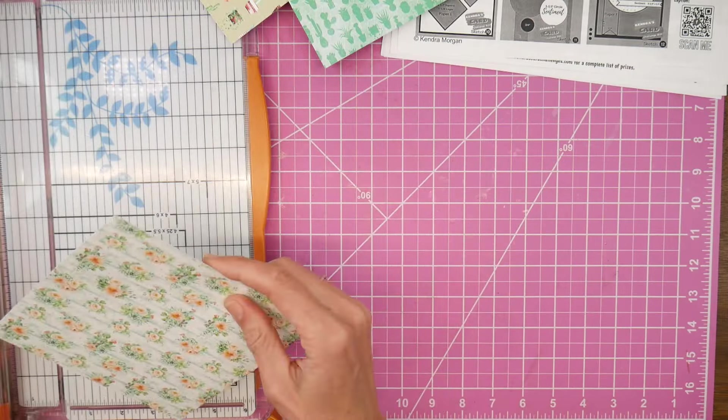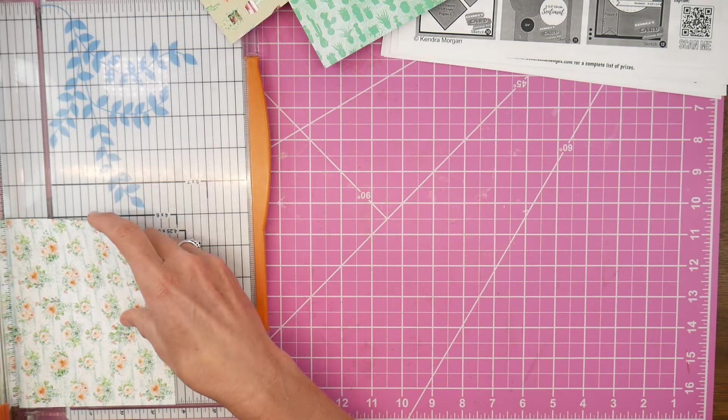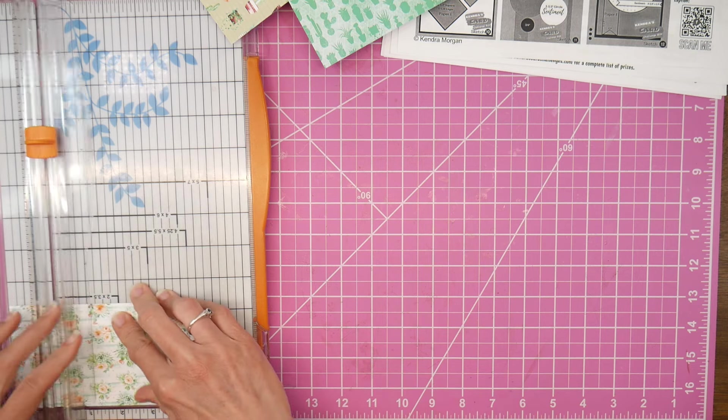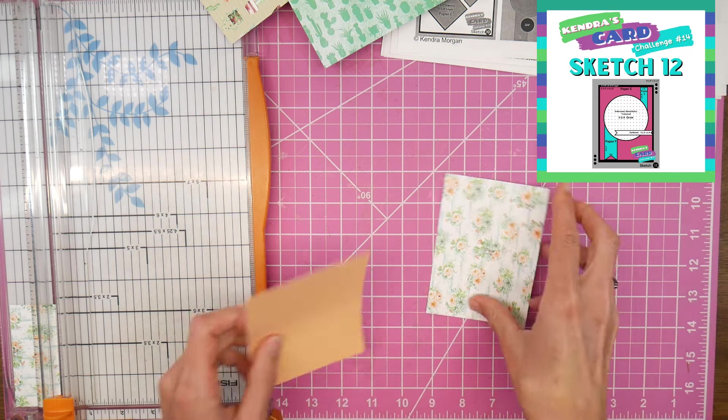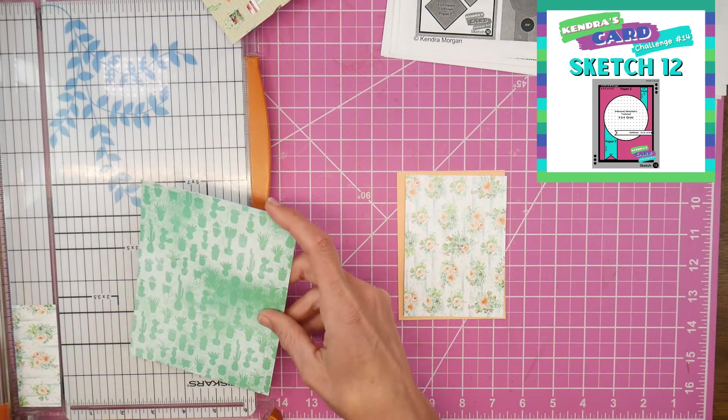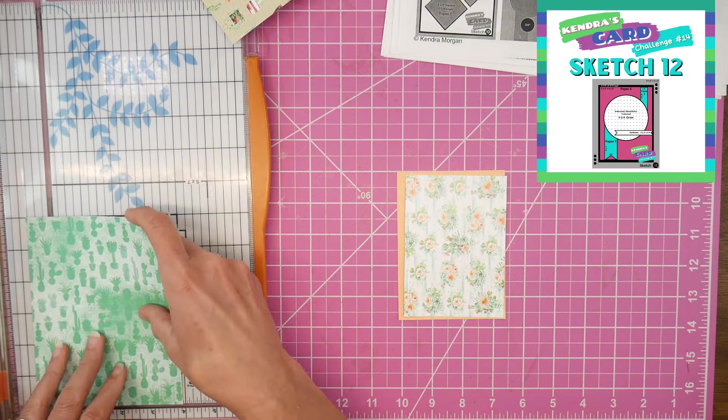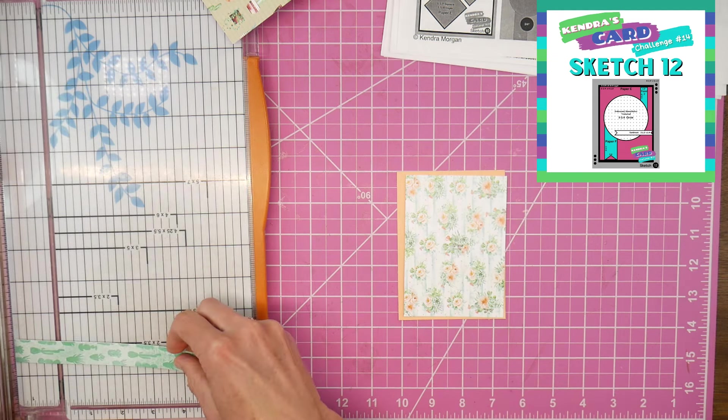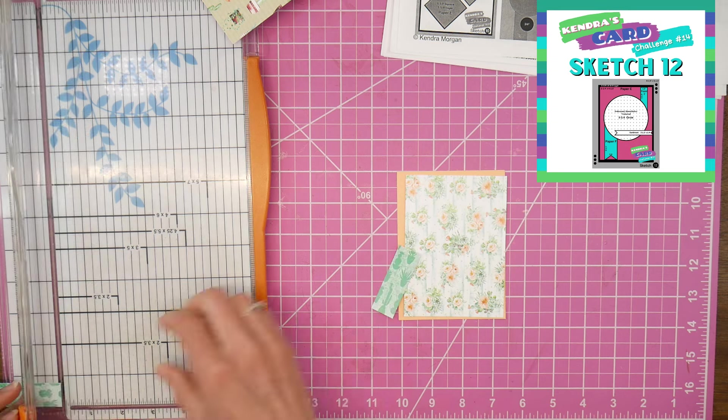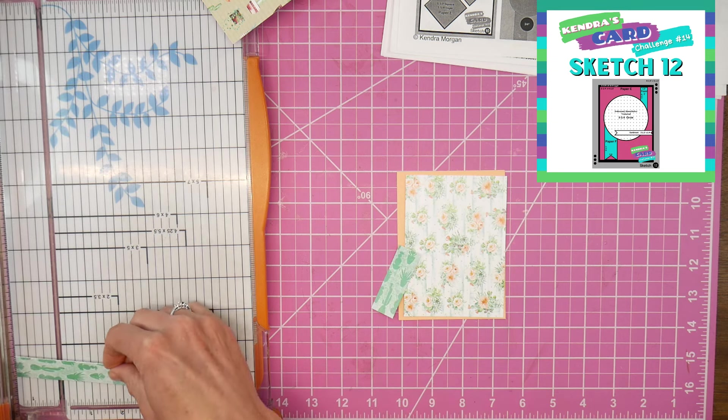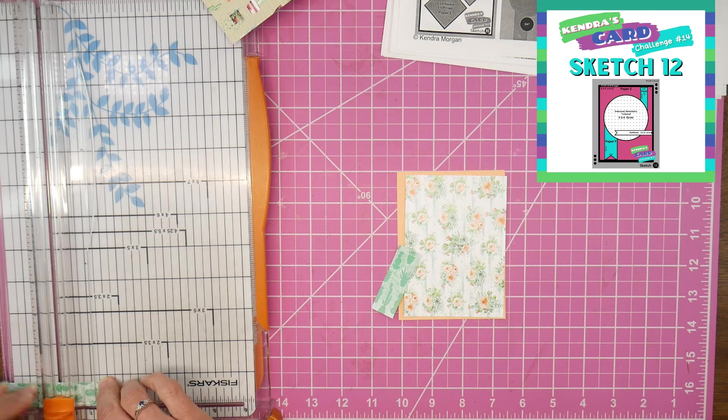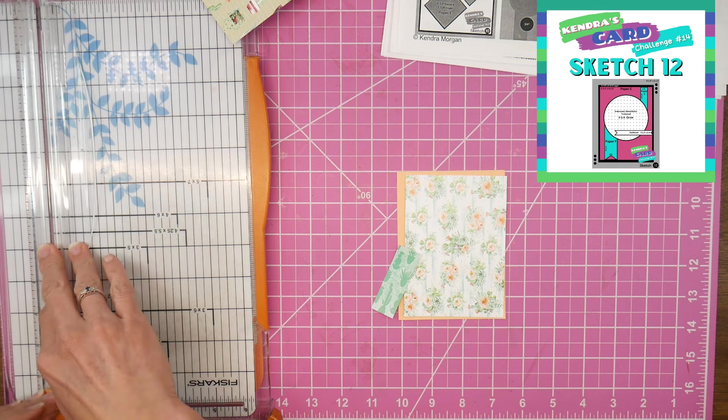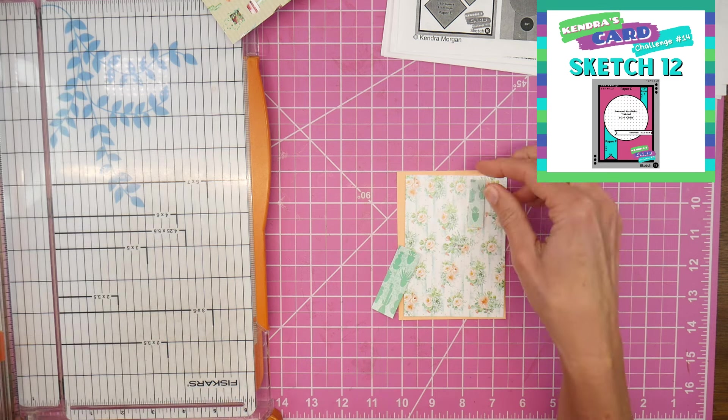I've chosen a couple patterns of the paper to work with and I'm going to start with sketch 12 and get my pieces cut down according to the dimensions on the card sketch. One nice thing about Kendra's card challenges is that not only does she give you cutting guides for six by six sheets of paper, but the card sketches that use all those pieces from the six by six papers, she also gives you the individual dimensions on each card sketch so if you want to just make one card at any given time you can easily do so, and that's what I'm doing today.